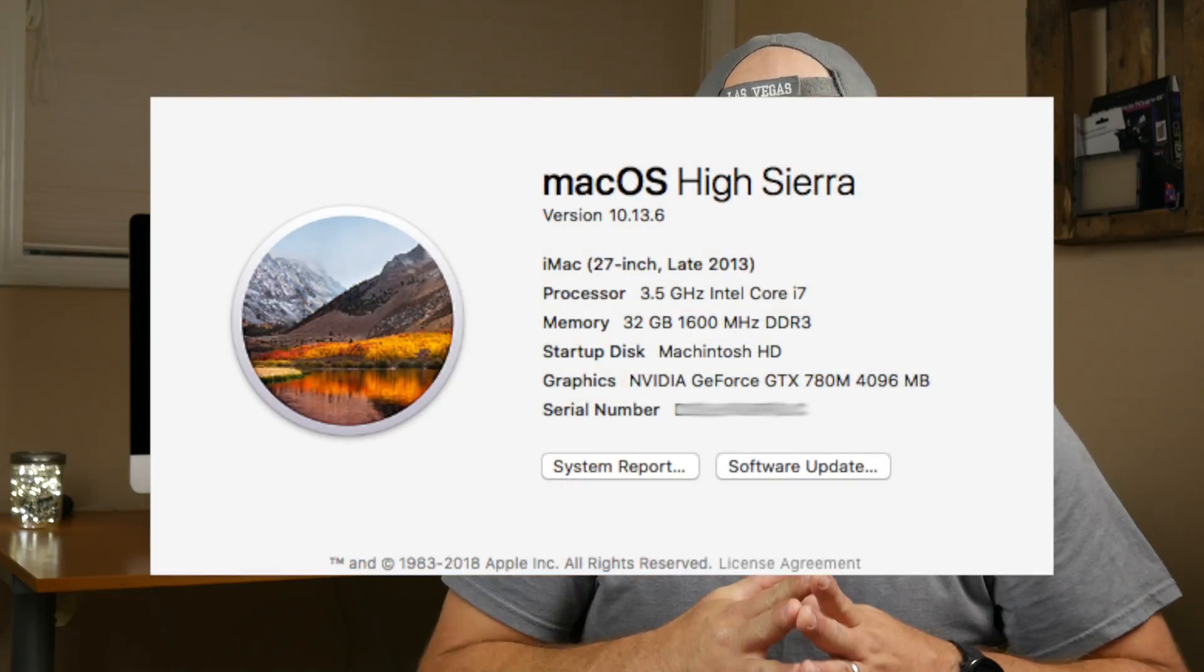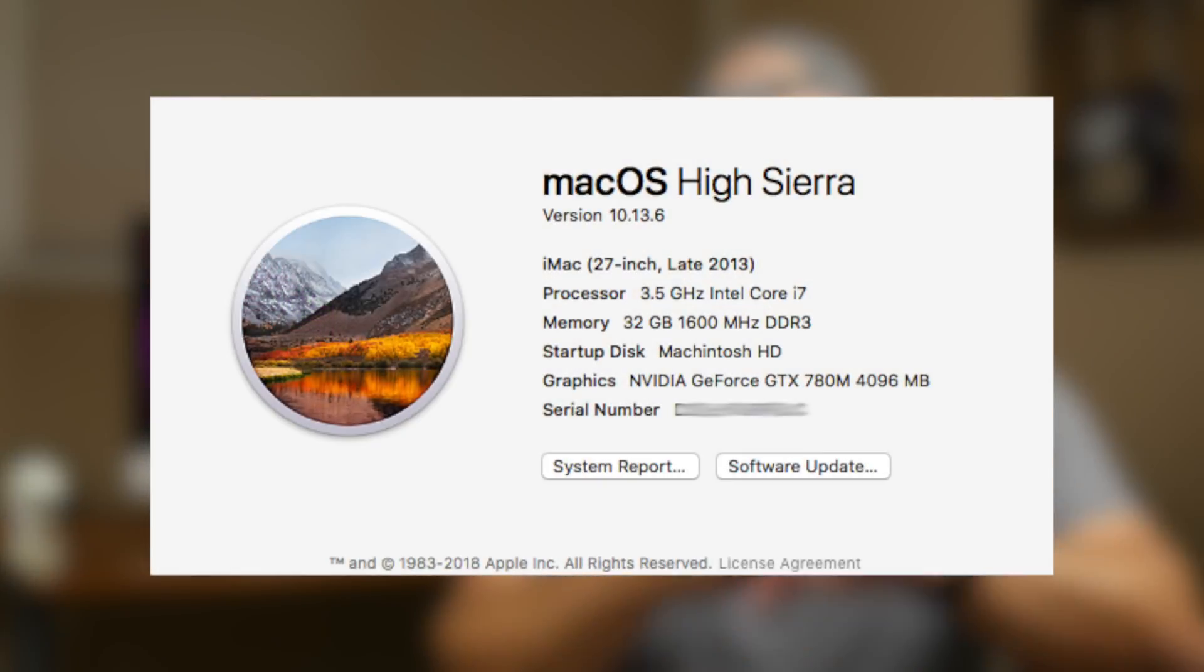All right, now before we get started, let me give you some quick specs on this machine. This is a 2013 iMac and when this came out, this was the top of the line 27 inch iMac fully spec'd out. It's got the fourth generation 3.5 gigahertz i7 processor, 32 gigabytes of RAM, a three terabyte fusion drive and a GTX 780m card with four gigabytes of video RAM dedicated to that card. This was a very expensive machine when it first came out. I got this just a few weeks ago for 650 bucks. And I think you're going to be pretty surprised at how well this edits 4K video.